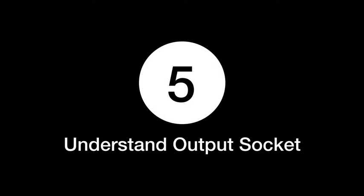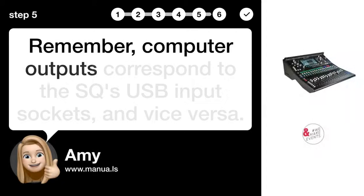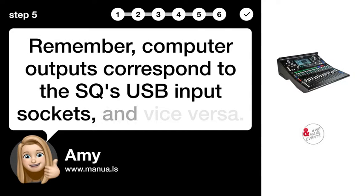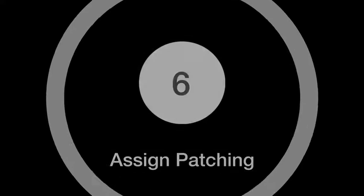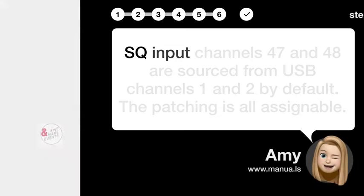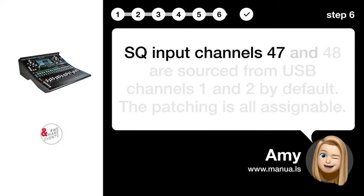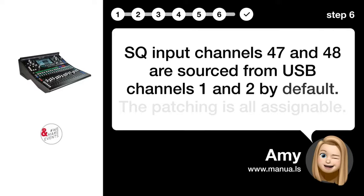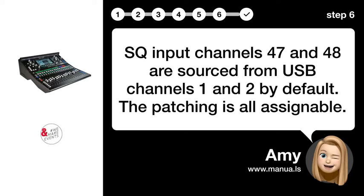Step 5: Understand output sockets. Remember, computer outputs correspond to the SQ's USB input sockets, and vice versa. Step 6: Assign patching. SQ input channels 47 and 48 are sourced from USB channels 1 and 2 by default. The patching is fully assignable.